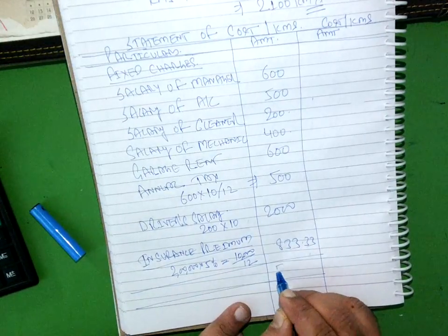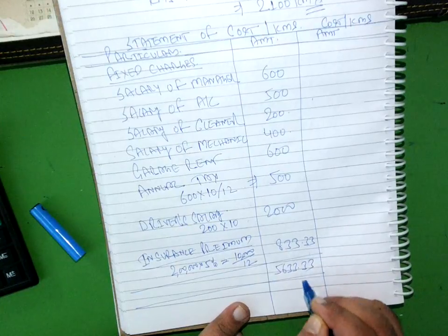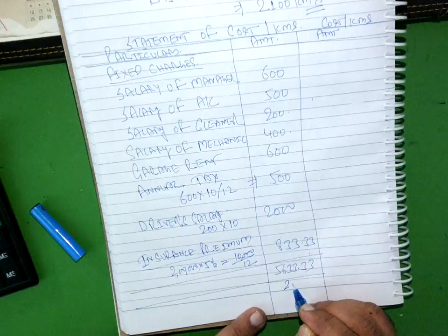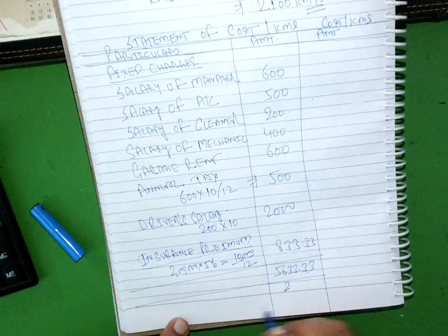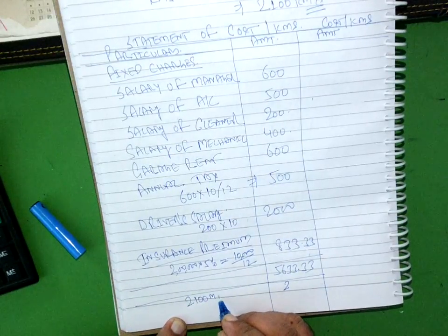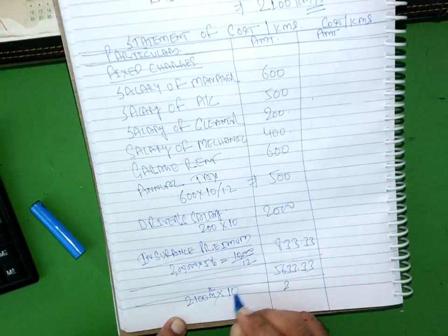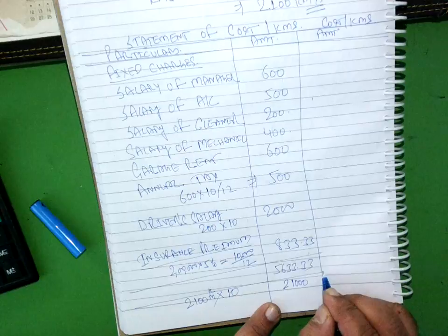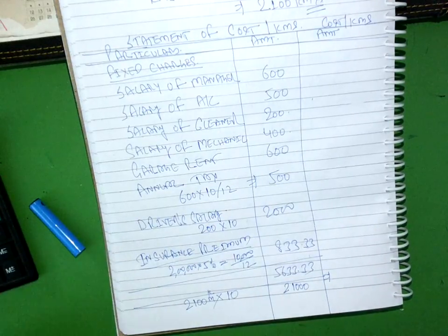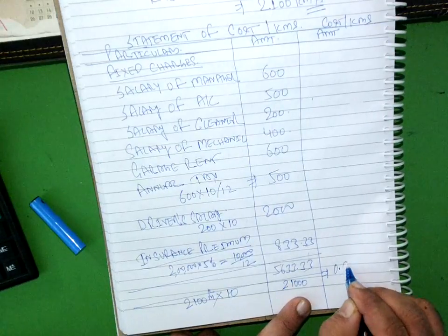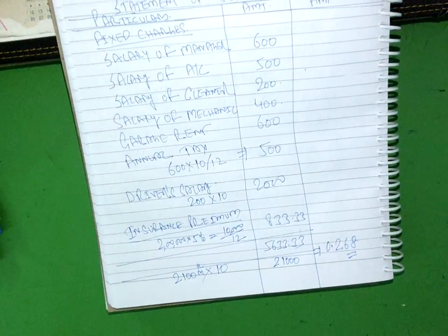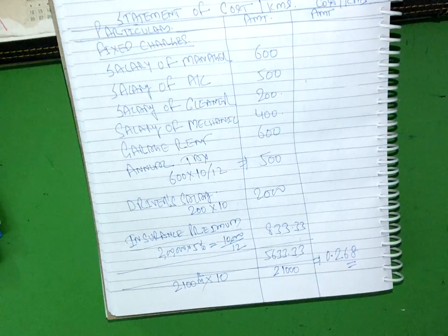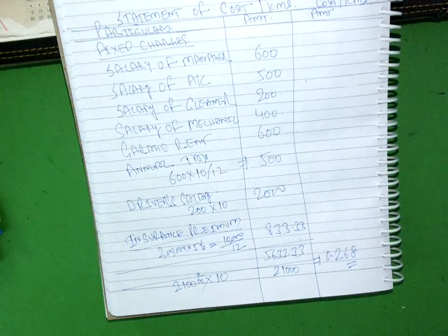Divided by 2,100 km into 10 taxis equals 21,000. This gives 0.268 per kilometer.